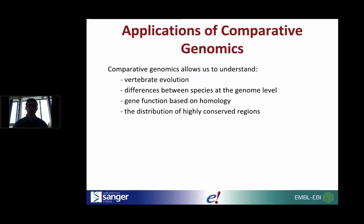Comparative genomics is a really powerful tool that allows us to understand how vertebrates have evolved over time. We can look at differences in the genome from species to species, how genes have gained or lost particular functions through homology relationships, and the distribution of highly conserved regions — inferring whether important regions haven't changed over a large amount of evolutionary time.